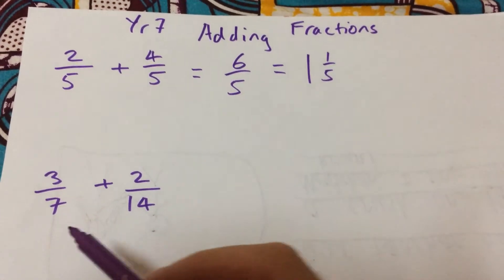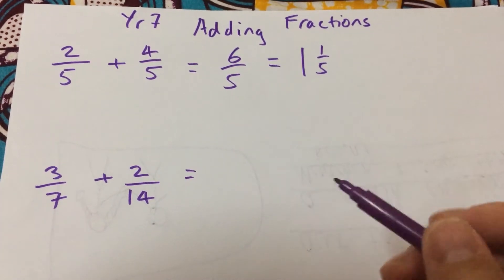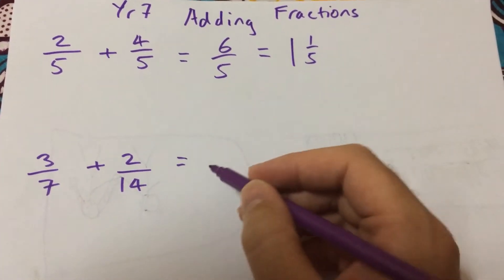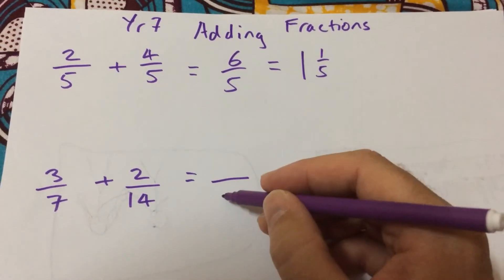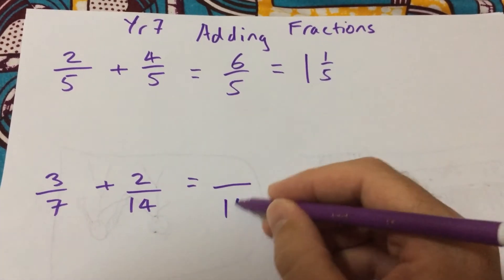Then, let's look at another example where I've got different denominators. Now, in this case we have to find what's called equivalent fractions. So we want to have the same denominator. I'm going to make them both have the denominator of fourteen.